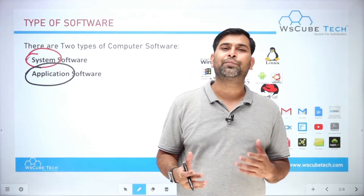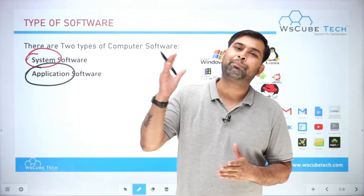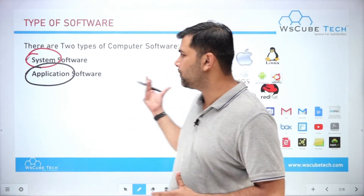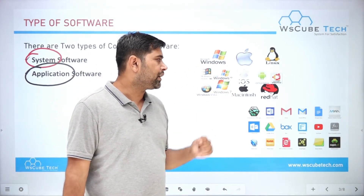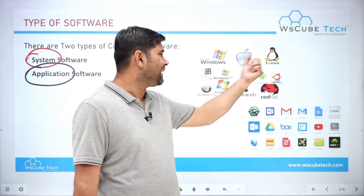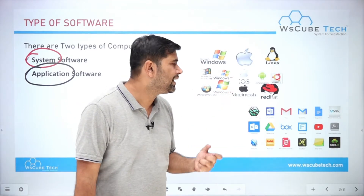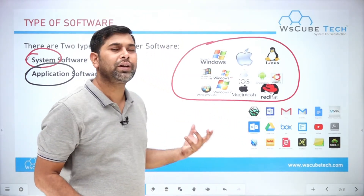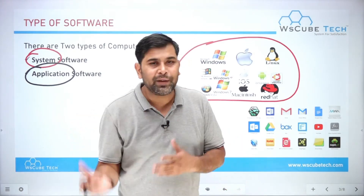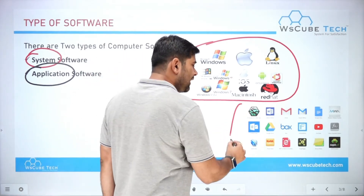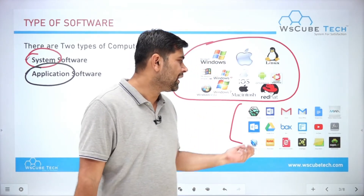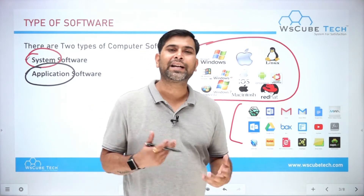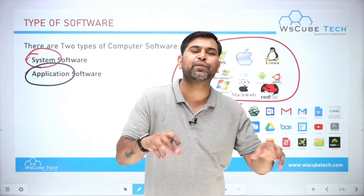Application software is a type of software designed to perform a specific task. Looking at examples on screen: system software includes Microsoft Windows, Macintosh, iOS, Red Hat, Android, Ubuntu, Linux, Windows XP, Windows 95, Windows Vista, and Windows 7. Application software examples include Gmail, Google Docs, Box, Drive, Word, Excel, and PowerPoint — software used for specific tasks.